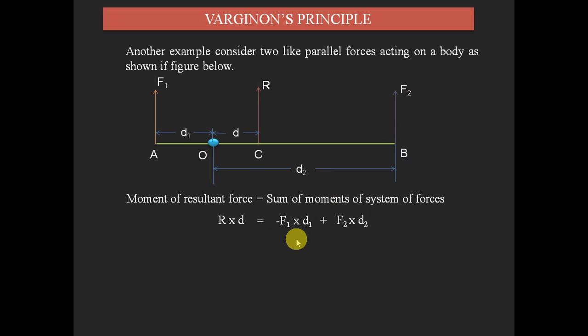So like this, we can form a formula for the system of two forces acting on a body according to Varignon's principle to find out any unknown element. Here the resultant force can be written as sum of these two forces F1 and F2 because both are in same direction and parallel to each other.